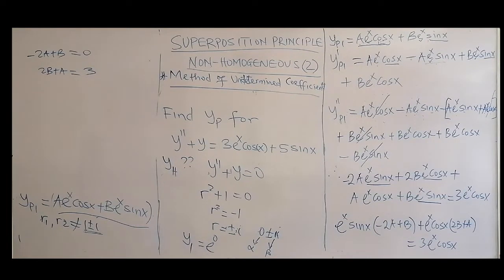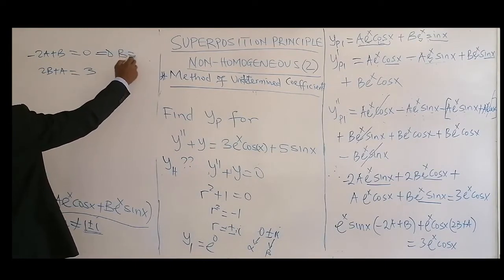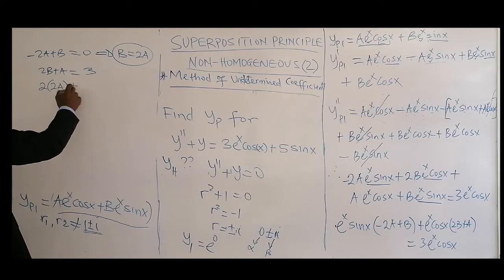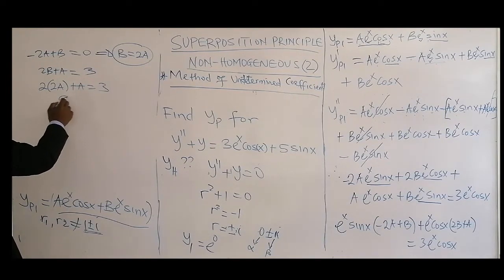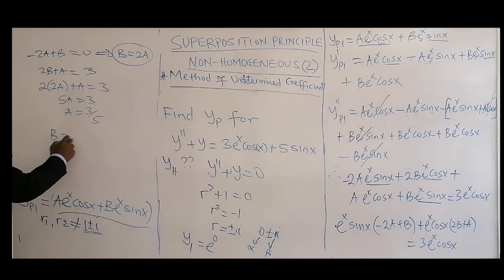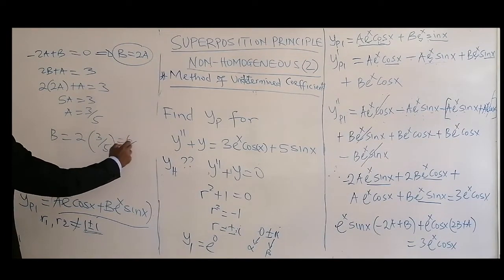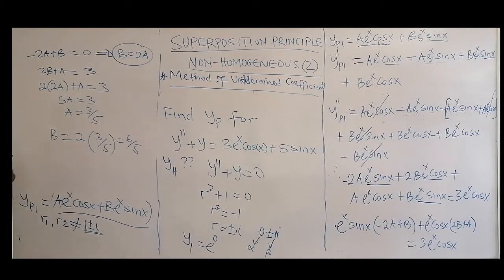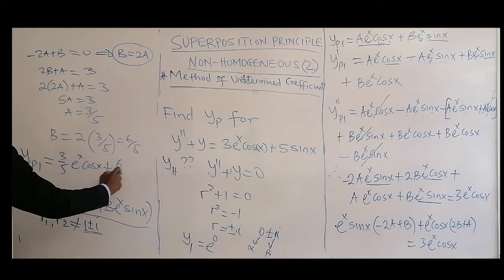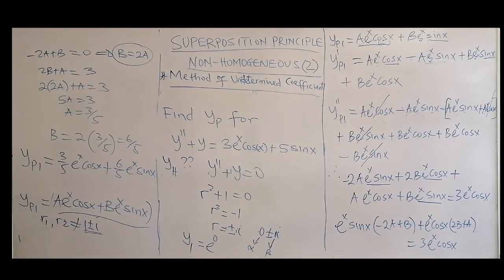From the first equation, B = 2A. Substituting into 2B + A = 3: 2(2A) + A = 3, so 5A = 3, giving A = 3/5. Then B = 2 × (3/5) = 6/5. So yp1 = (3/5)·e^x·cos(x) + (6/5)·e^x·sin(x).